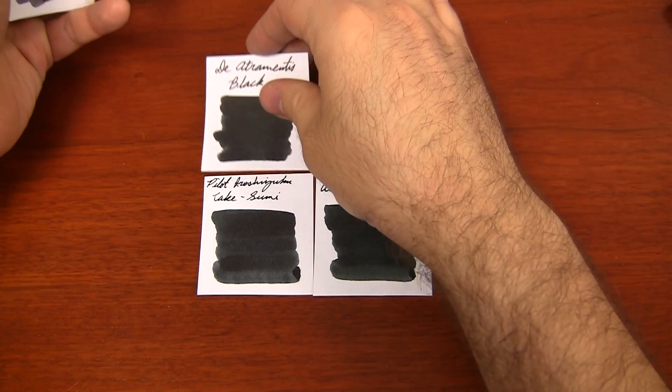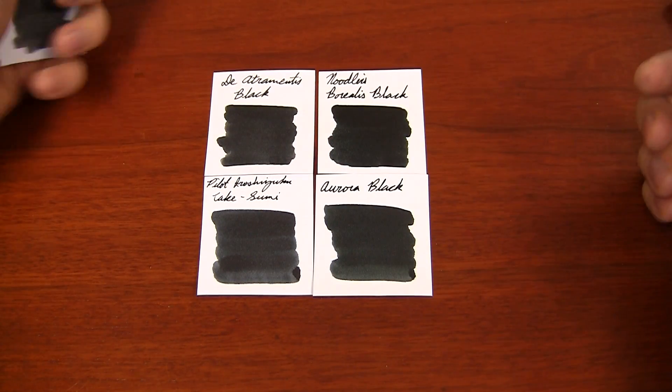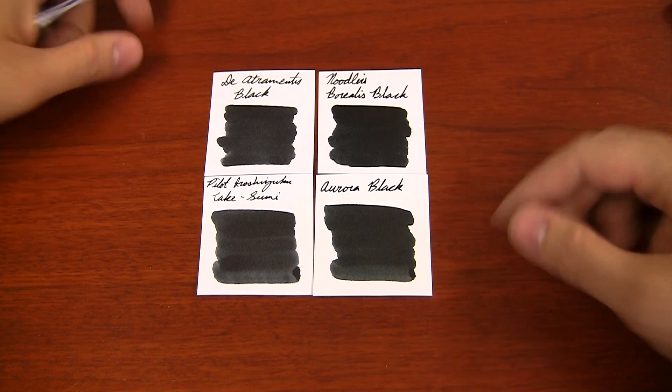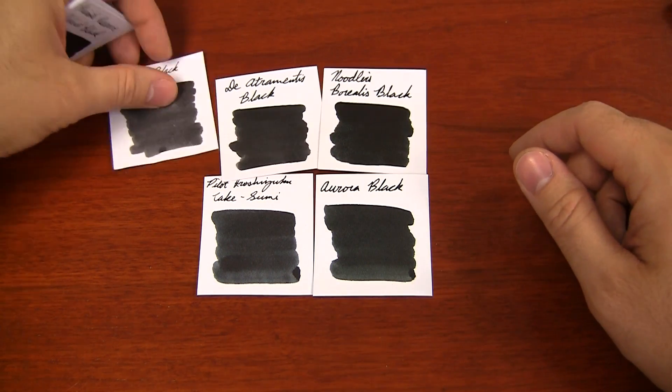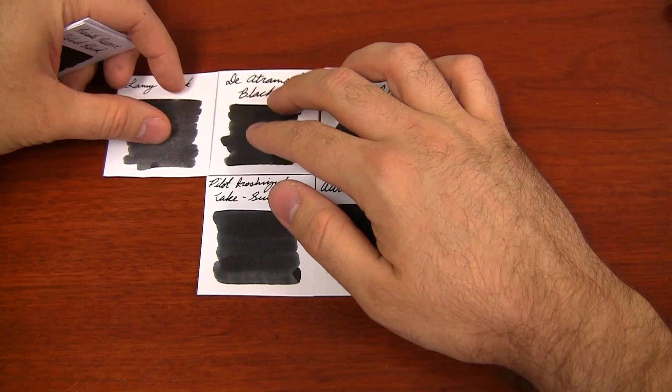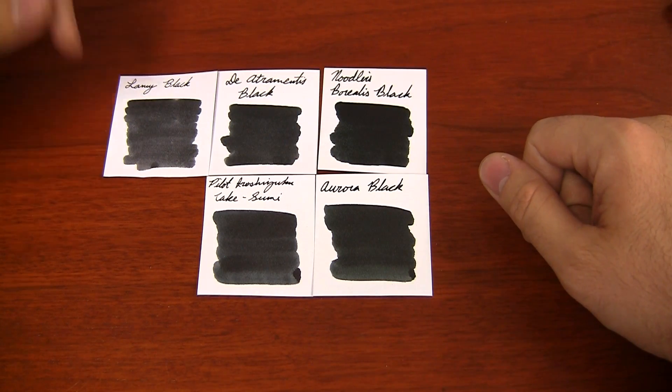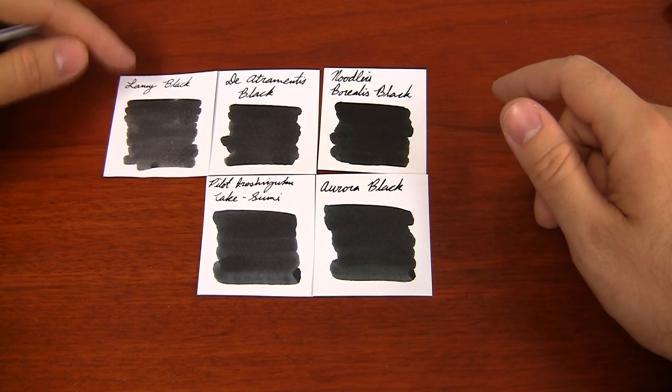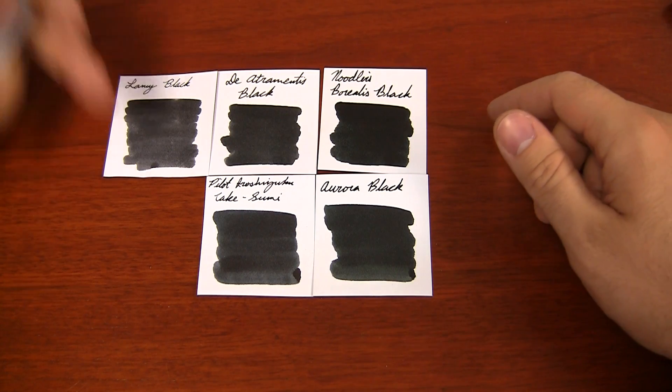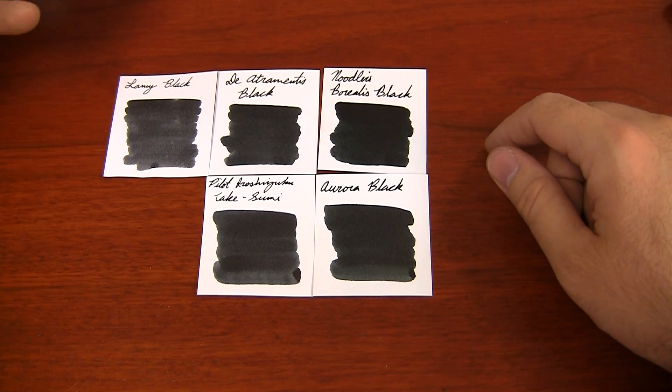Some other ones that compare to Diamine Mentis Black, that one is fairly close to Takesumi. Still very wet, looks very, very close in color. Lamy Black is really kind of more of a gray. This is a little more of what I was expecting with the bamboo charcoal name, was kind of a gray looking black. But Takesumi is darker than Lamy Black. I'm pleased with that.